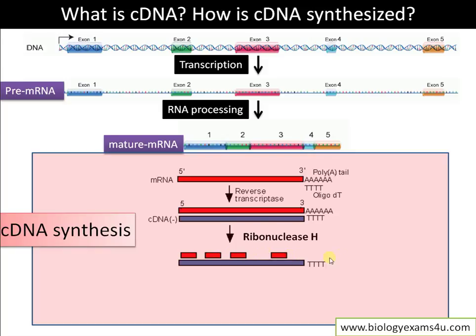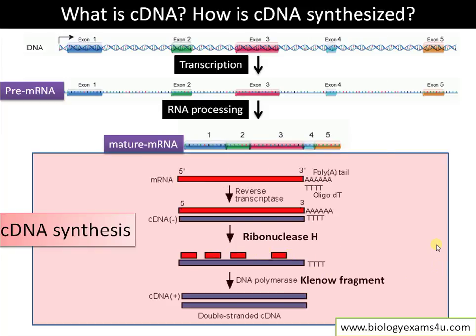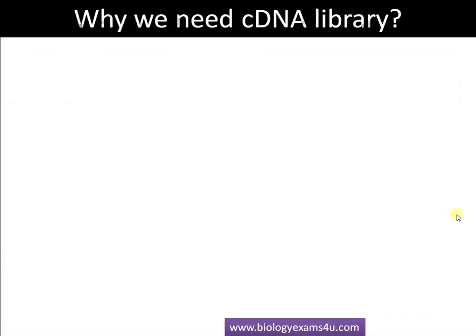Enzymes like RNase H are used to cleave the RNA, and DNA polymerase like the Klenow fragment is used to synthesize the second strand. We have given a video on the Klenow fragment also. This cDNA can then be used for the construction of a cDNA library.